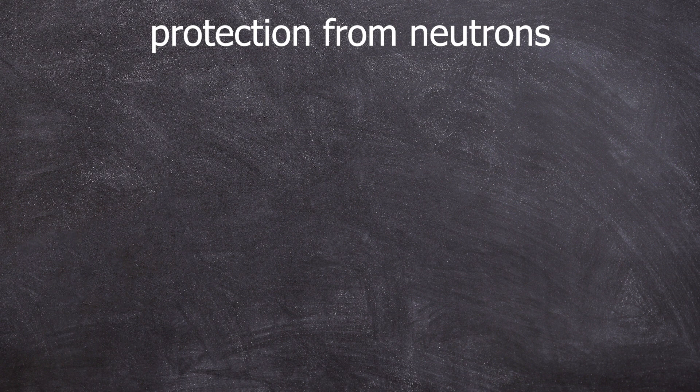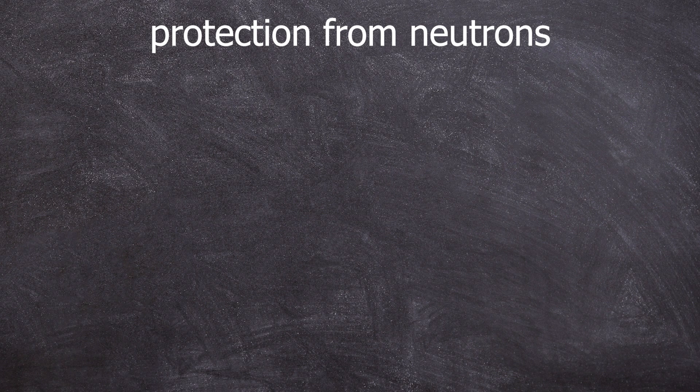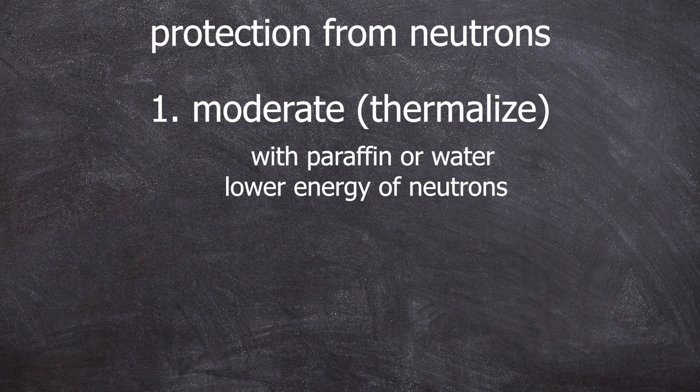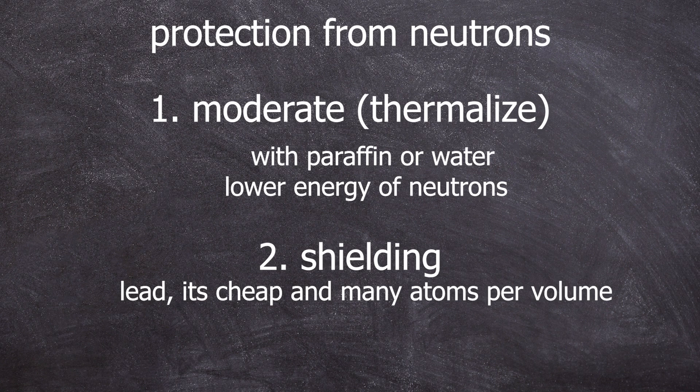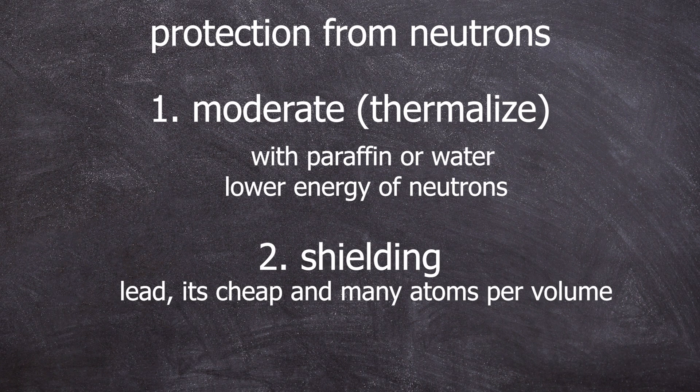Now that we know we have neutrons, how do we protect ourselves from them? In practical radiation protection, it's called first moderate, then shield. So use paraffin or similar until the neutrons are well thermalized and then shield them with, for example, lead. Lead is cheap and due to the high density, offers many large atoms relative to a very small volume, increasing the likelihood of interactions with thermal neutrons.